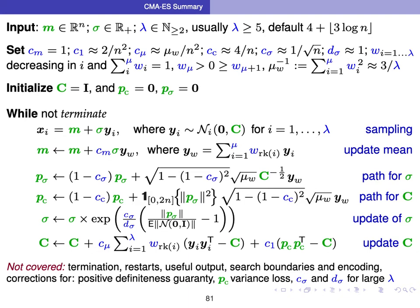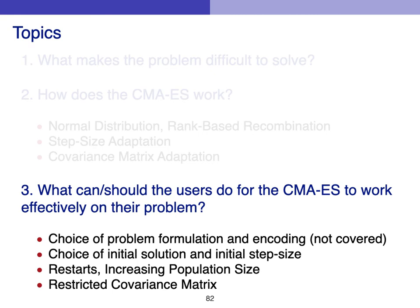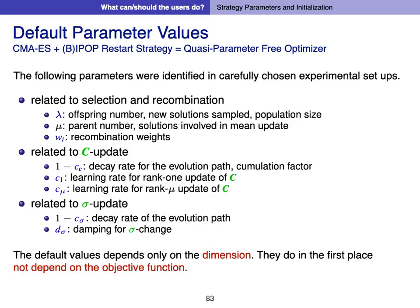We finalize the second part of the tutorial. The last topic is what can and should the user do for CMA-ES to work effectively on their own problems. We have introduced a number of hyperparameters: population size, number of parents, recombination weights, cumulation factor for rank-1 update, learning rate parameters for rank-1 and rank-mu updates, cumulation factor for CSA, and damping parameters. However, their default values are carefully designed based on experiments as a function of dimension and don't need to be tuned depending on the objective function in the first place.